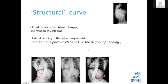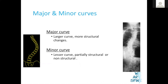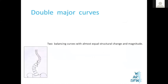Some definitions you need to know: a structural curve has intrinsic changes — the bone is rotated or wedged, or the curve does not straighten on bending — while the other is a non-structural curve. A major curve is the larger curve and a minor curve is the smaller one. If there are two equal curves, it's called a double major curve.